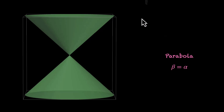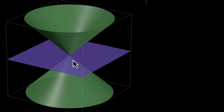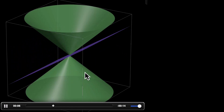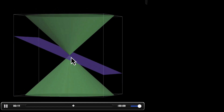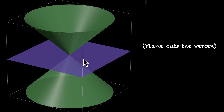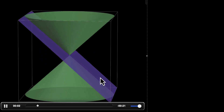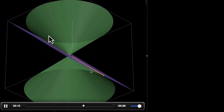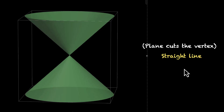There are special cases when the plane passes through the vertex. For the next few sections, we'll keep this plane passing through the vertex. When the plane cuts the vertex at an angle beta between 90 and alpha, we get a point — that's also a conic section. What do we get when the angle beta is exactly equal to alpha? This plane passes through the vertex and touches this side, so what we get is a straight line. In fact, this line is the generator for this cone. We get the generator when this angle is exactly equal to alpha, and that's also a conic section.